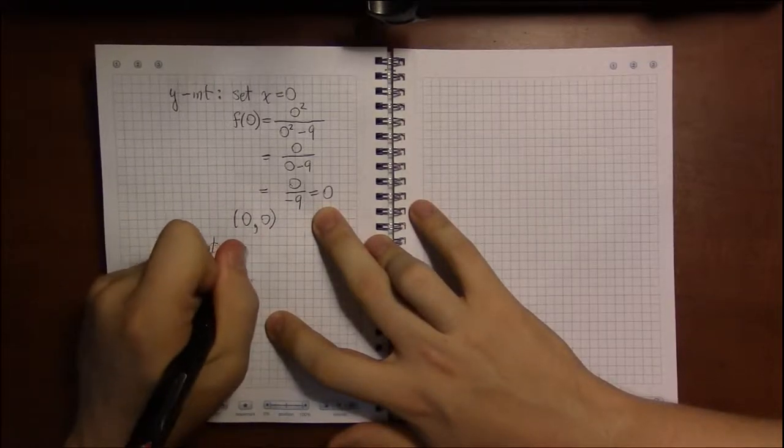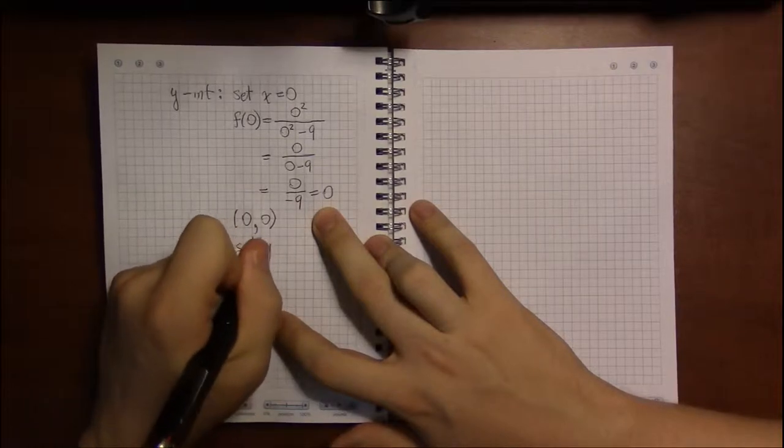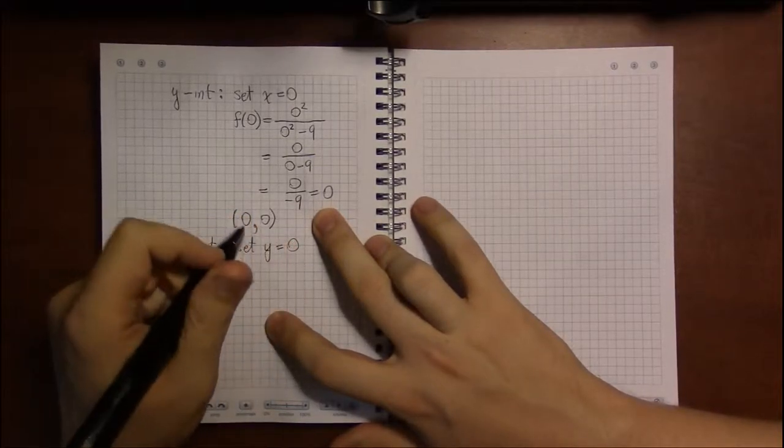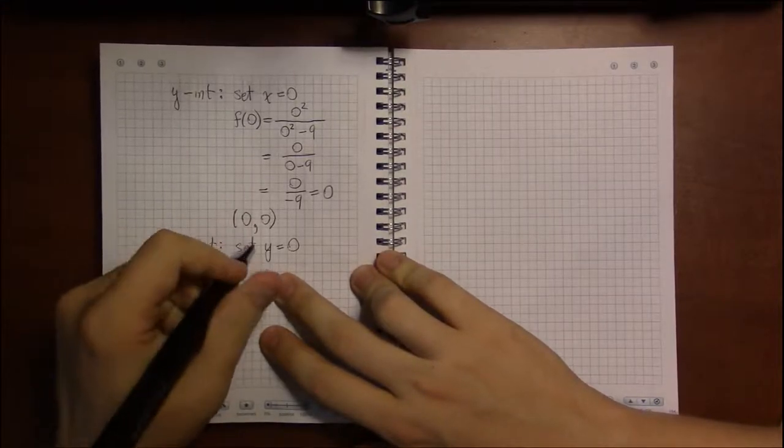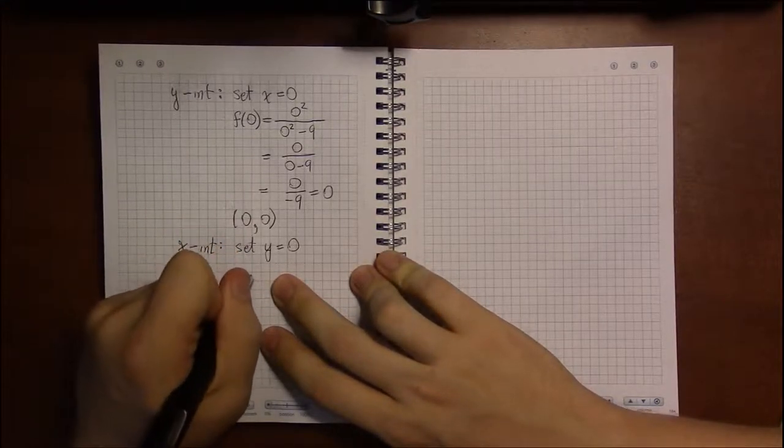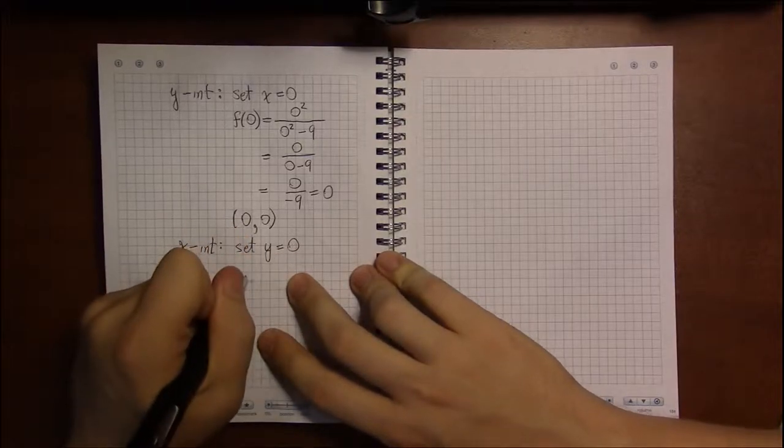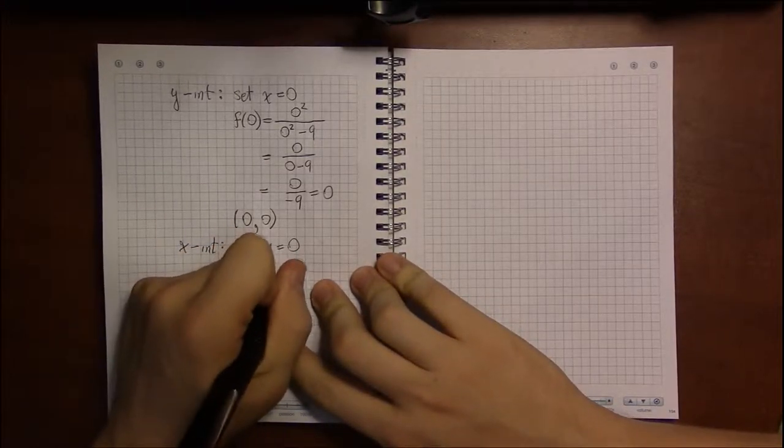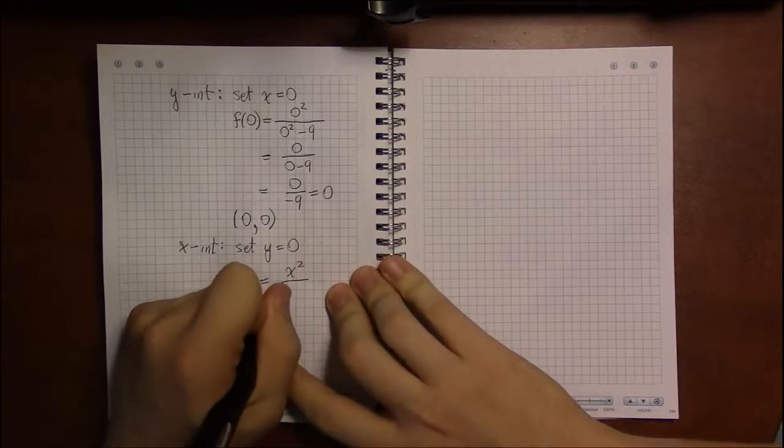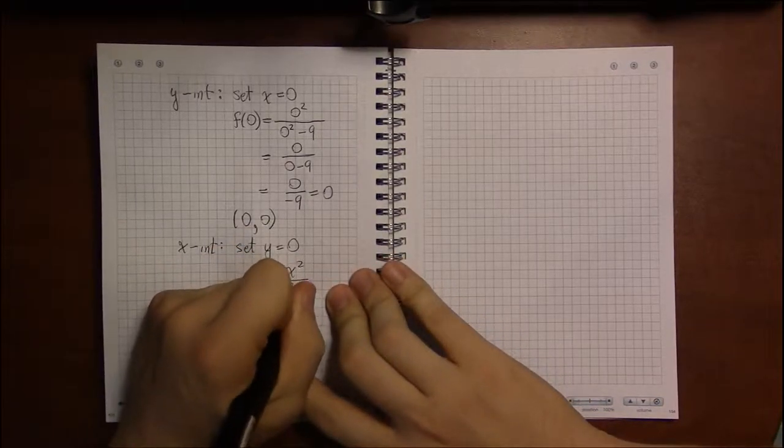For the x-intercepts, you set y equal to 0, or f(x) in our case, and solve for x. So we're going to set—rather than f(x) equals—it'll be 0 equals x squared over x squared minus 9.